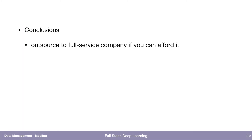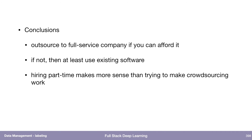My conclusions are: if you can afford it, outsource to a full-service company like Figure Eight or Scale.ai. If you cannot afford that, at least try to use existing software so you don't have to build your own. But if you're hiring your own labor, I think it makes sense to actually hire part-time people — for example on Upwork — rather than try to make Amazon Mechanical Turk work. With Mechanical Turk there's just so much extra complexity from the fact that annotators are ephemeral and poorly paid, so you really have to have a separate layer of quality control. Whereas if you hired part-time people and invested in training them, you could trust them to actually do it correctly.